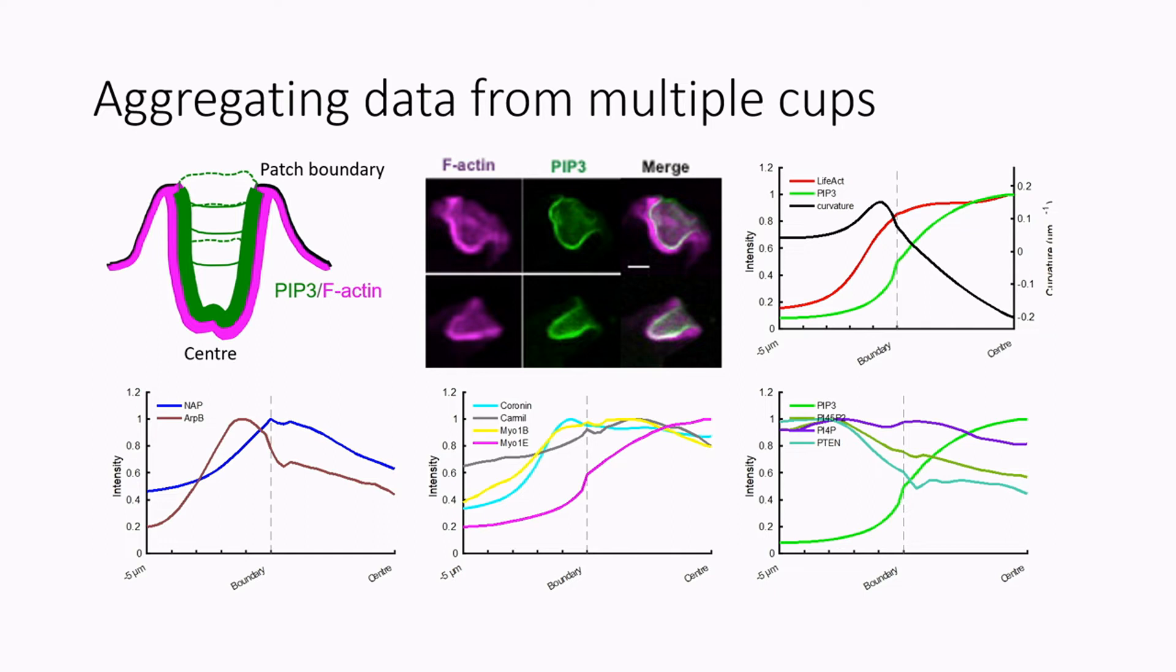We have to bear in mind that cups come in all sorts of shapes and sizes, so we wanted to aggregate these. So we just normalize the length by dividing by the maximum distance, and then that gives us a profile of the fluorescence relative to the boundary of the patch which we can then aggregate and look at the general trends.